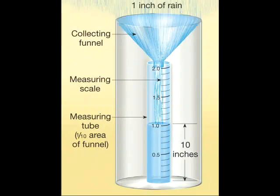Precipitation is measured with a standard rain gauge. The standard rain gauge has an opening of 8 inches diameter at the top. The funnel conducts the rain through a narrow opening into a measuring tube, which reduces measuring error through excessive evaporation. The accuracy of the measurements is 0.01 inches; everything less is called a trace of precipitation.